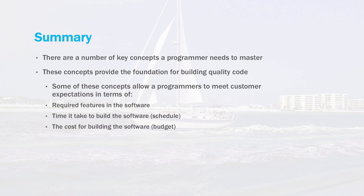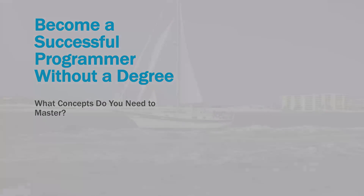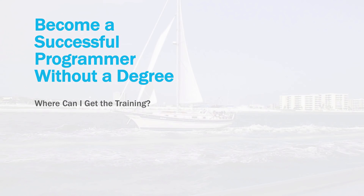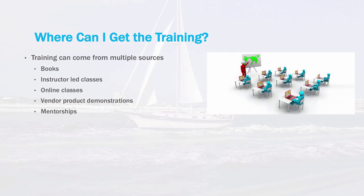In this lesson I'll discuss options for getting training to become a programmer. There are several options available today, each with advantages and disadvantages. Training today can come from multiple sources, including books, instructor-led classes, online classes, vendor product demonstrations, and mentorships. I'll discuss each one of these in more detail.